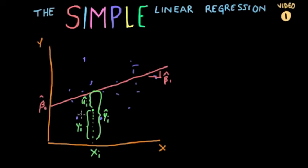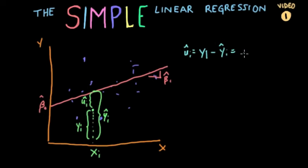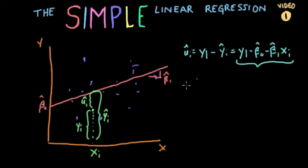These are our estimations because we can't actually know the population. The formula for the residual is: u-hat sub i equals y sub i minus y-hat sub i. If we substitute in our estimated regression for y-hat, we obtain: u-hat sub i equals y sub i minus beta zero hat minus beta one hat times x sub i.